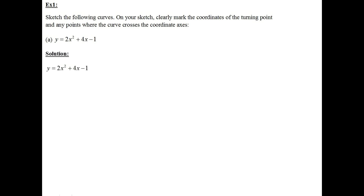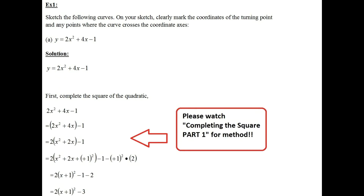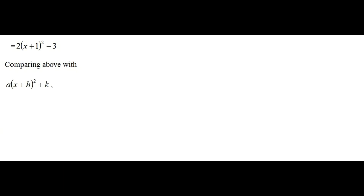Let me show you the solution. The first step is to complete the square of the quadratic. Here are the steps for completing the square. Once you get the answer, you need to compare it with a times (x plus h) squared plus k. By comparison, a is 2, h is 1, and k is minus 3.